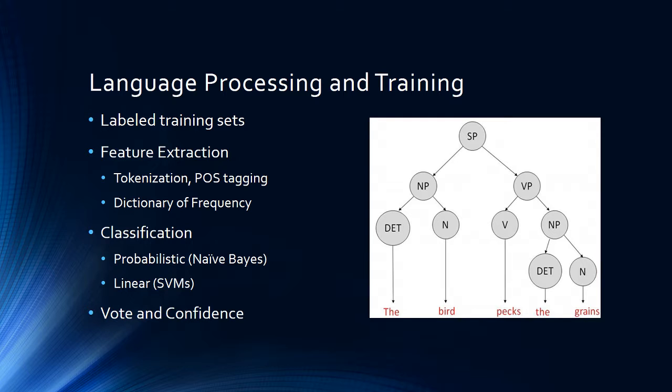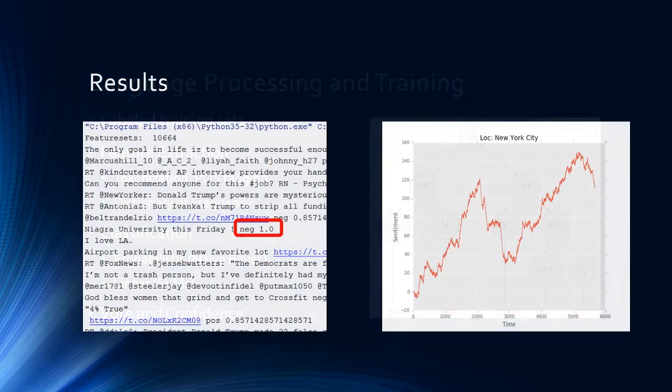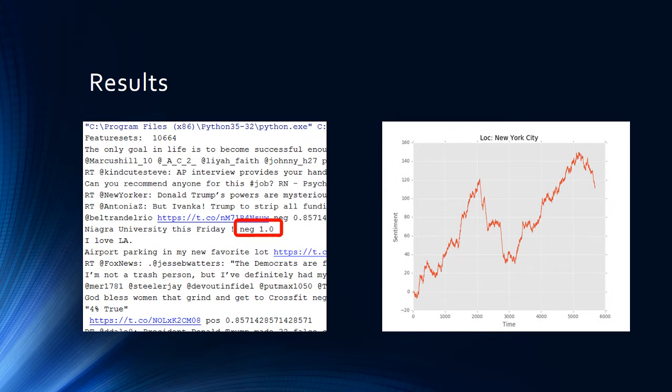So that is why that number has been chosen. And finally moving to the results, as you can see on the left image there are 10,664 feature sets and the tweets as they come along. As you can see in the red box that is marked there, I have put out the negative tweet along with the confidence—that means that I can say with 100 percent confidence that the tweet is negative.